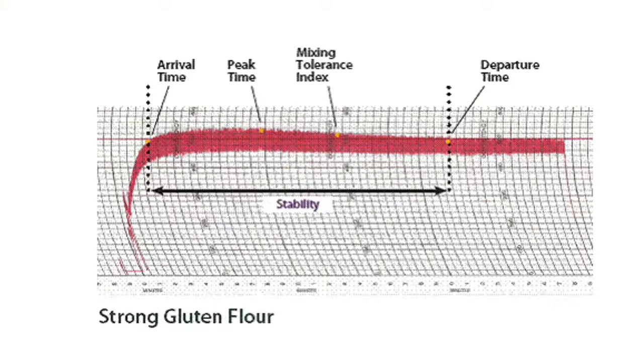They look at the arrival time, peak time, departure time, MTI, and stability. Those are the five metrics they're really looking at when examining a farinograph.